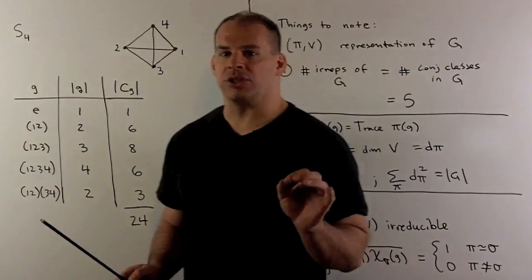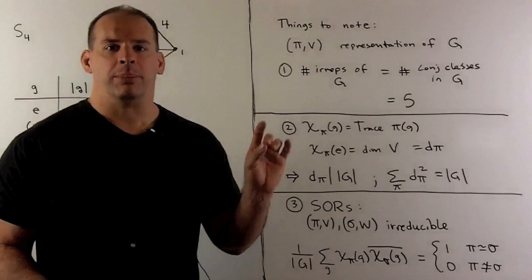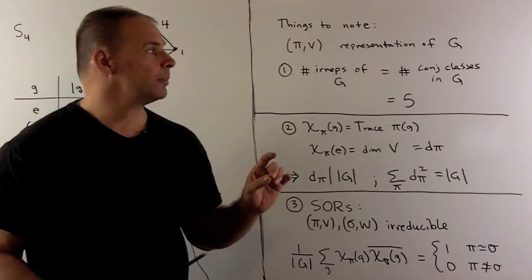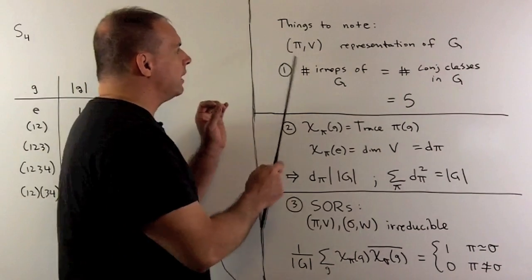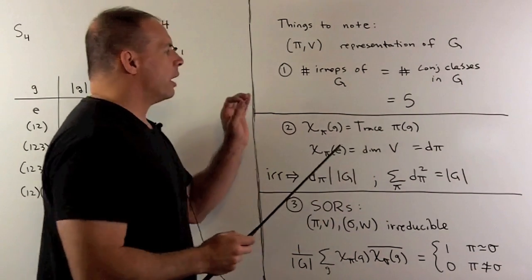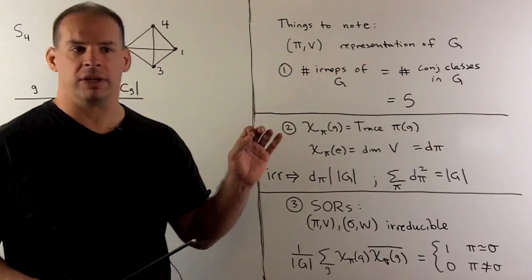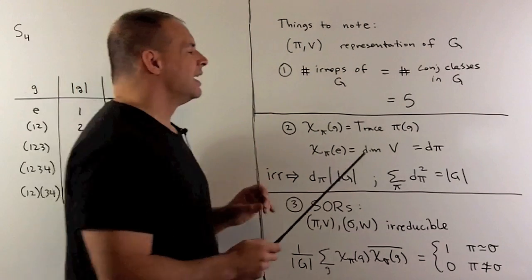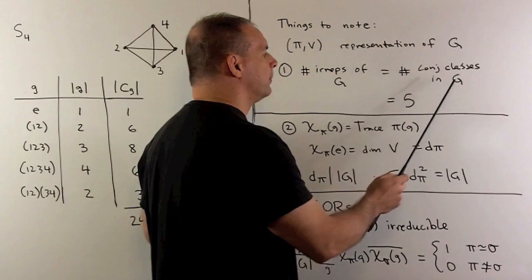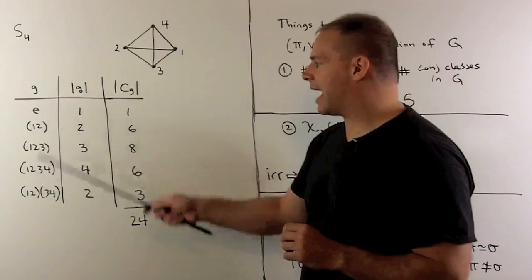If we want the character table of S4, let's review the basics of representation theory for finite groups. If pi V is a representation of G, the number of irreducible representations of G, up to equivalence, is equal to the number of conjugacy classes in G. In our case, we've just seen that's equal to five.